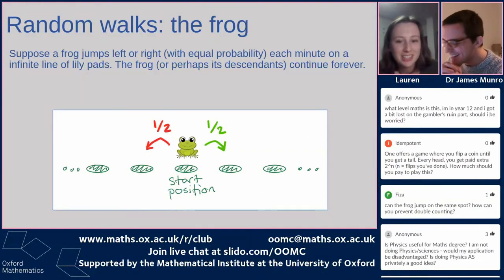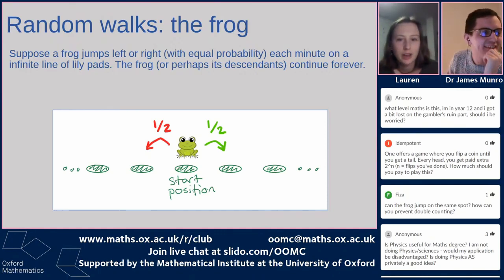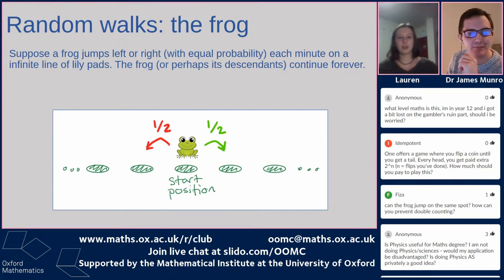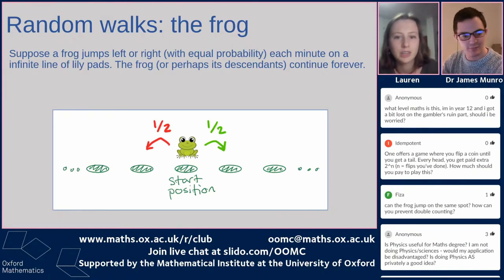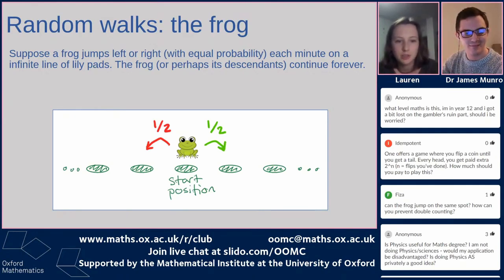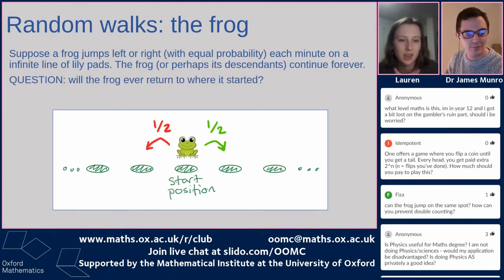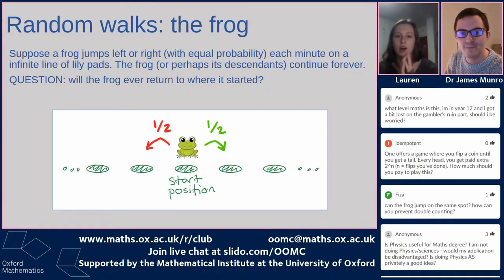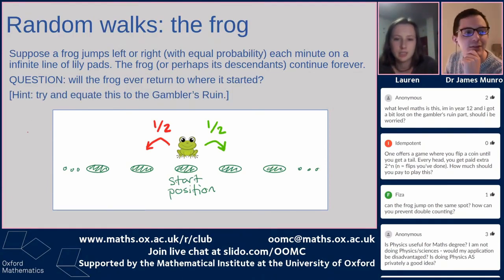Our frog is going to jump either left or right with probability of a half, so this is symmetrical — it can go either direction. It's on an infinite line of lily pads, so it's not going to win or lose or stop somewhere; it's just going to keep going forever. The question I want to know is: will my frog ever return to where it started? We need to recognize how we can use the maths we did in the gambler's ruin for this frog problem.